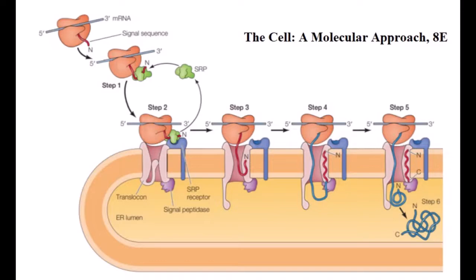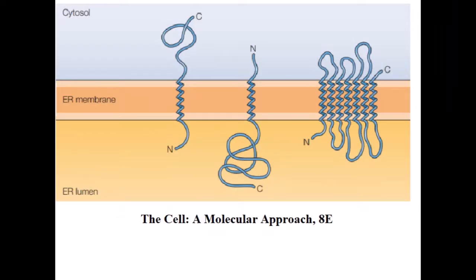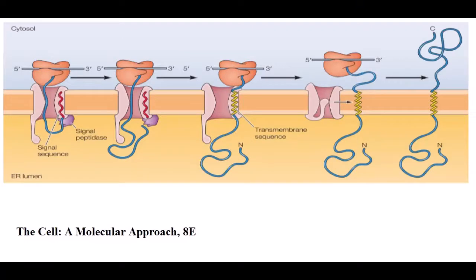The next process is protein insertion in the endoplasmic reticulum membrane. Proteins destined for incorporation into the plasma membrane or the membranes of other compartments are initially inserted into the ER membrane instead of being released into the lumen. Transmembrane proteins are inserted via alpha-helical membrane regions, with a transmembrane sequence recognized by the translocon to stop translocation of the polypeptide chain.